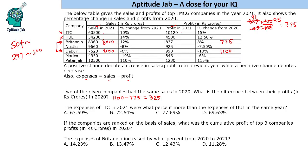To find how much percent more ITC expenses are than HUL, we calculate 504 by 297. Instead of dividing by 297, we divide by 300 and increase the result by 1 percent to compensate. This gives approximately 69.67 percent. The answer is very close to 70 percent. This approximation method gives us the correct answer to one decimal digit.